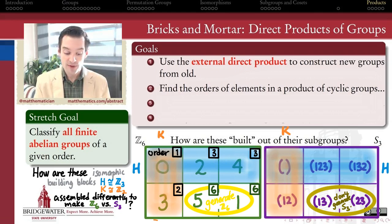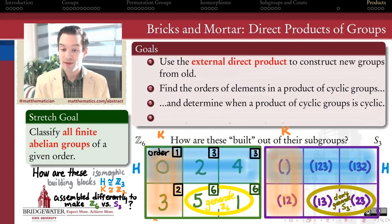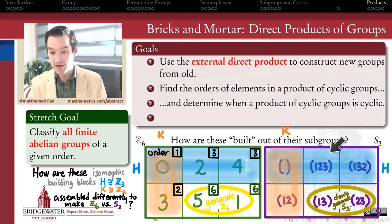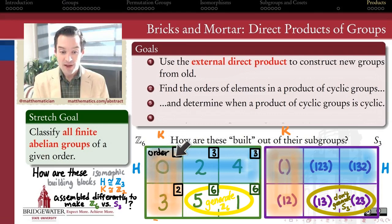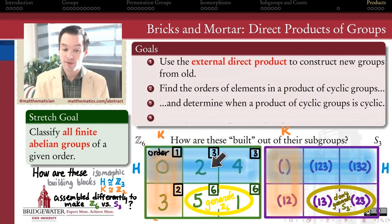But clearly the story is different in Z mod 6 than it is in S3, in the example over here on the right. In the example on the left I took two cyclic groups, Z mod 3, so a cyclic subgroup generated by 2, and a cyclic subgroup generated by 3.